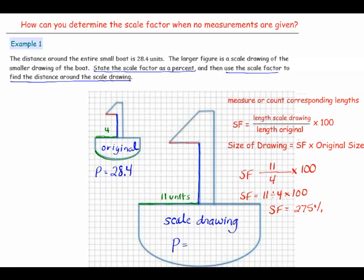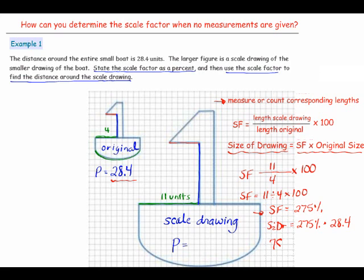Step one was to measure. Step two was to calculate the scale factor. Now our last step is to find the size of the drawing. We take our scale factor and multiply it by the original size. The scale factor is 275 percent and the original size is 28.4. So the size of the drawing equals 275 percent times 28.4, which is 78.1. Our perimeter is 78.1 units.